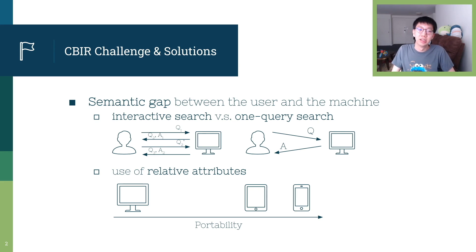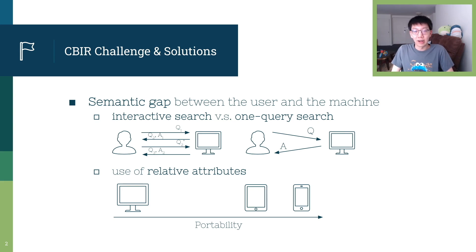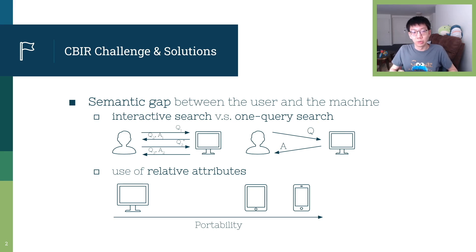For example, search systems can set up filters and ask for relative comparisons based on attributes. However, using textual form of feedback requires the machine and the user to understand these attributes in the same way. So, what if we don't have those attributes? What if some attributes are so loosely defined that they cannot be accurately yet concisely expressed in words?